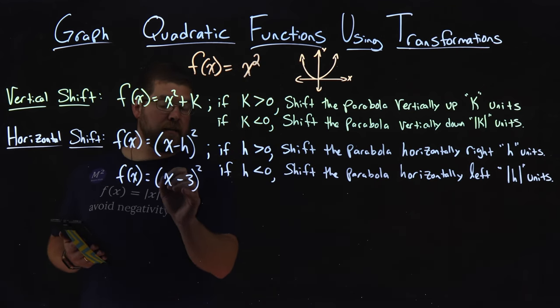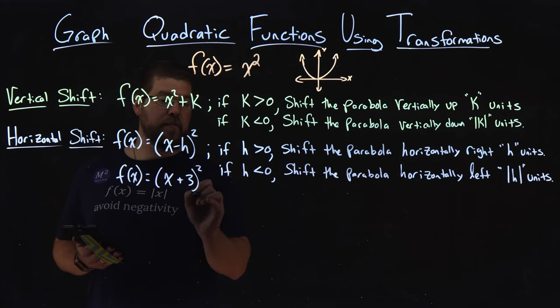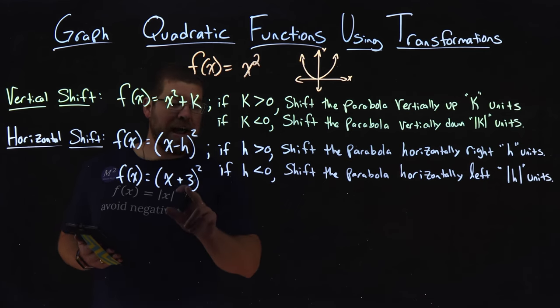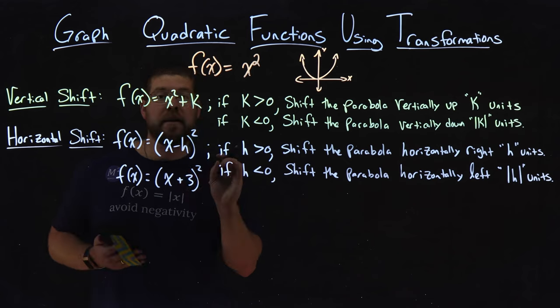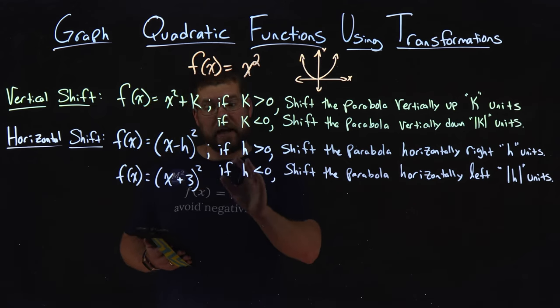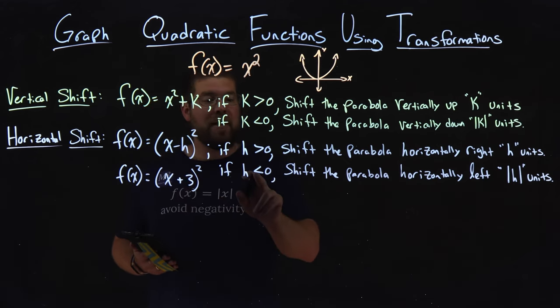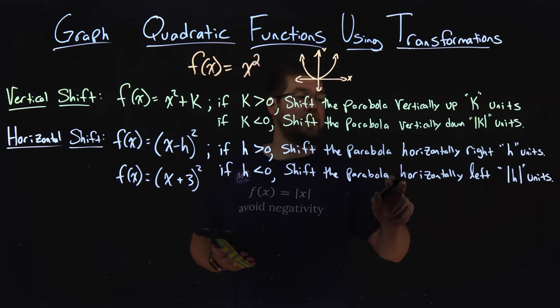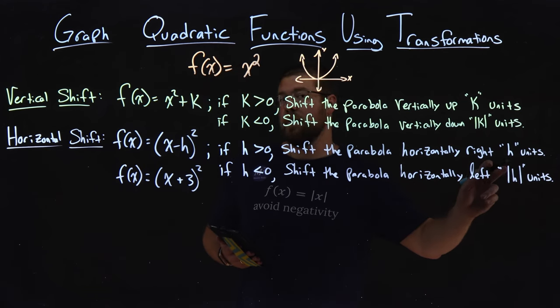If we had a function like this, f(x) equals x plus three squared, that actually would give us an h value of a negative three because subtracting a negative creates that positive, and that's when we would shift the parabola horizontally to the left three units.